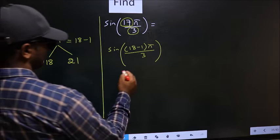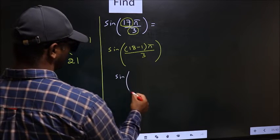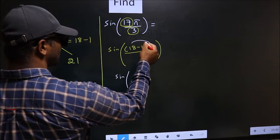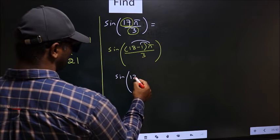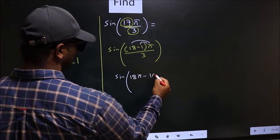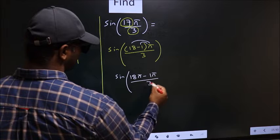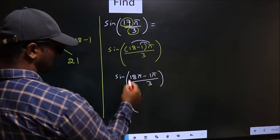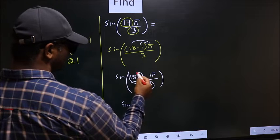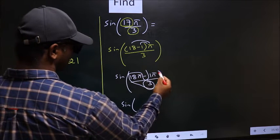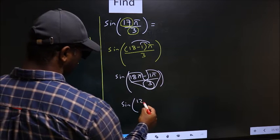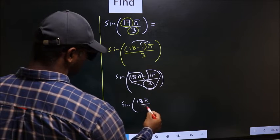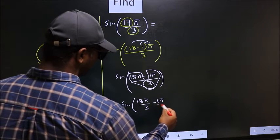Next, now you should open up the brackets. So that is 18 pi minus 1 pi by 3. Now you should split the denominator in this way, that is 18 pi by 3 minus 1 pi by 3.